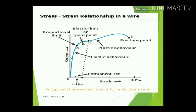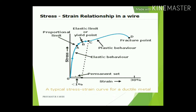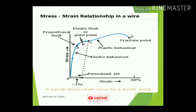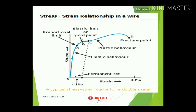At point B, which is the elastic limit or yield point, the material transitions from elastic to plastic behavior — that is, permanent deformation begins. From B to C is the start of permanent deformation. Point D is the fracture point. So all ductile materials first show elastic behavior, then exceed the yield point, then undergo plastic deformation, and finally fracture — separating into two or more parts.